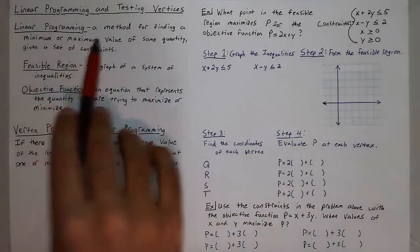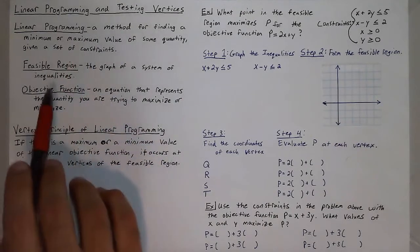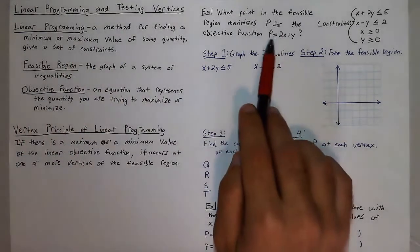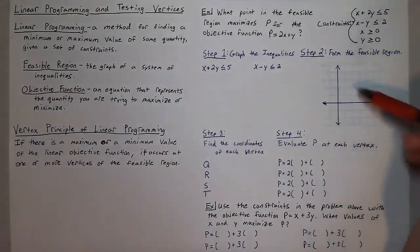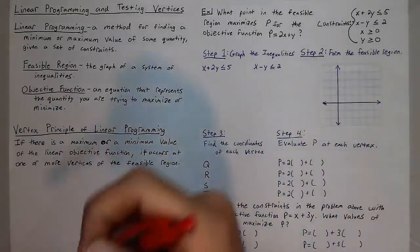And with linear programming, if we're looking for a maximum or a minimum, we usually have some sort of objective function, usually like p stands for profit, where we plug in points from the feasible region to see which one would give us a maximum.